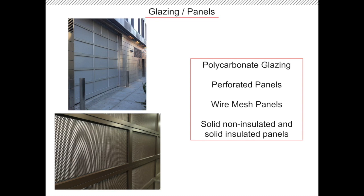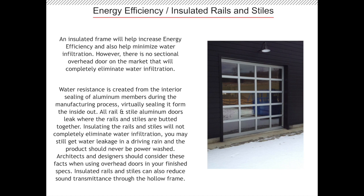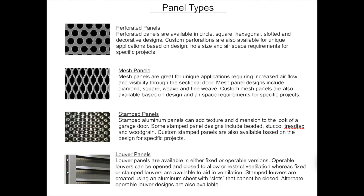Polycarbonate, plexiglass, perforated panels, and wire mesh panels are available in these overhead doors. You can also use solid non-insulated and insulated panels. The insulated panels are light enough to be used in the pass door leaf. Insulated rails and stiles used in conjunction with insulated glazing will help tremendously with energy efficiency. These perforated panels are often seen on parking garages or other applications that may need higher airflow. If using them for aesthetic purposes, you can add a solid panel behind for a more private or secure option.